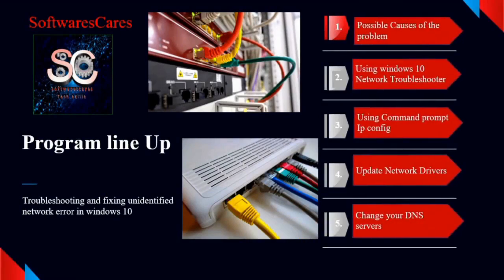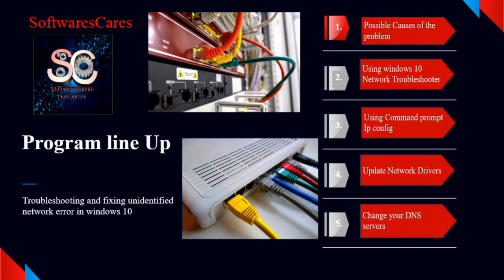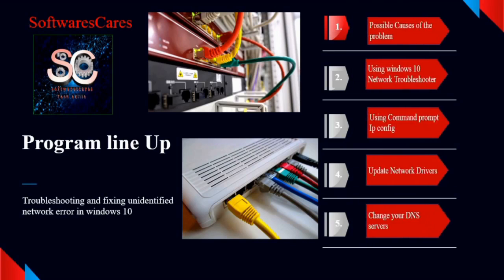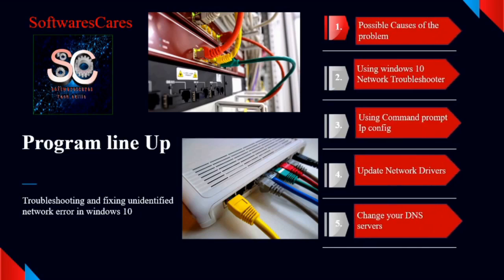I am going to start by showing you some of the causes of an unidentified network error, then you are going to start troubleshooting and fixing this problem right away. There are several ways of fixing this problem. In this video we will try to fix the problem as follows: first using the Windows 10 network troubleshooter, secondly by using command prompt, thirdly by updating our network card drivers, and finally by changing our DNS servers.